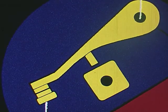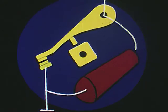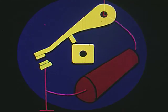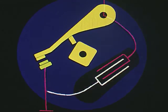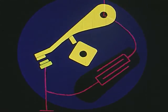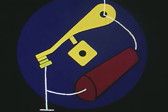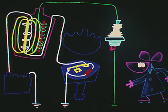To eliminate arcing across the breaker points as they open, a condenser is added which serves as an electronic spring or shock absorber, soaking up unneeded current. This also helps the magnetic field collapse more rapidly.